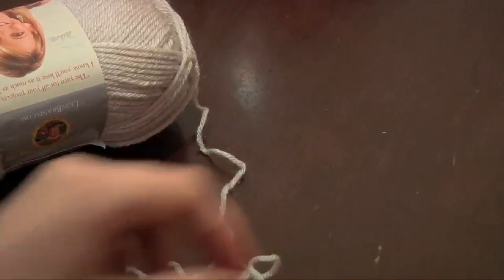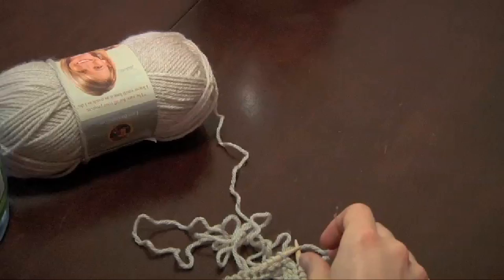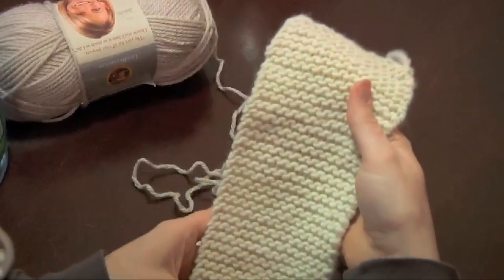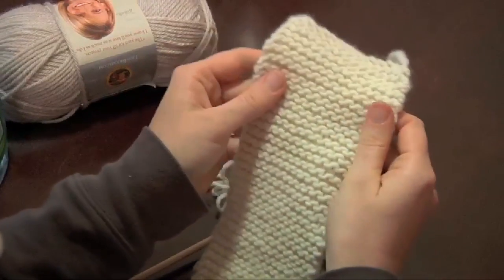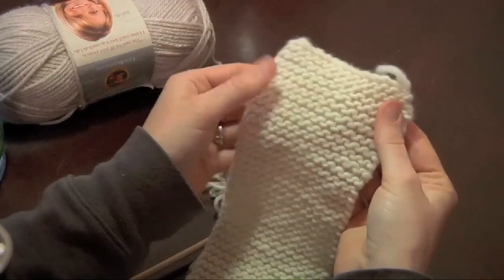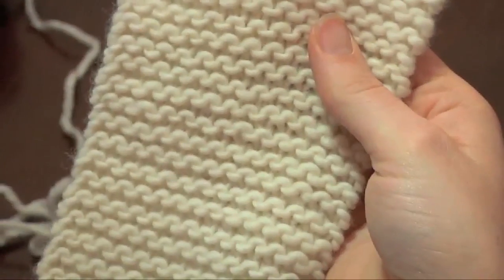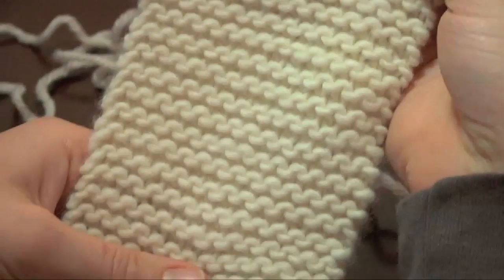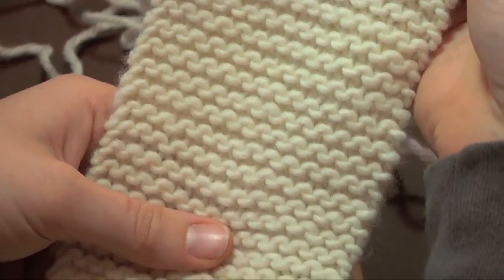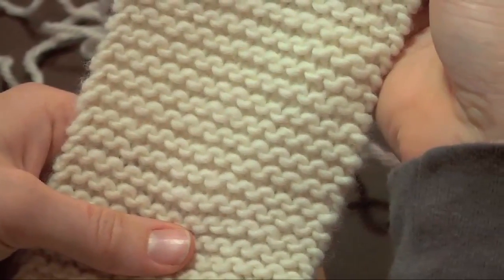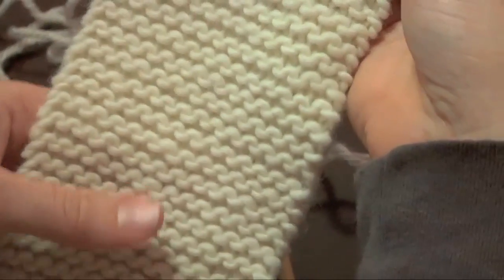I want to show you what a swatch of knit stitch looks like, so that you have an idea. This is 20 rows, 20 stitches. This is the look that you're going to be going for. But don't be discouraged, it takes lots of practice.